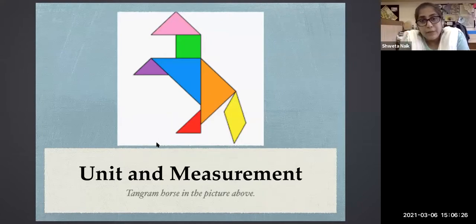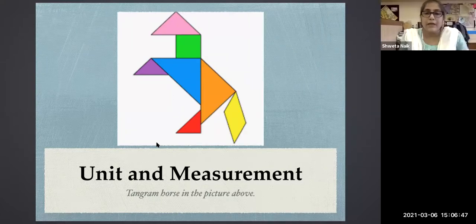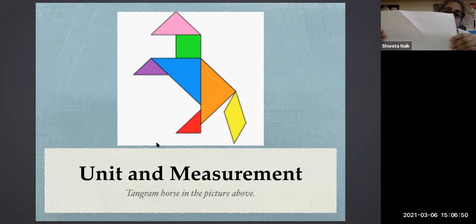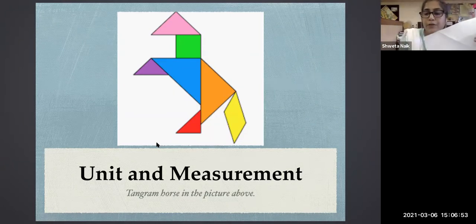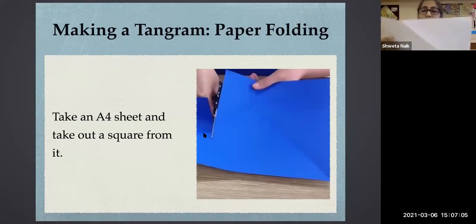This is a familiar picture for many math teachers — these are tangram pieces, and this is a horse made from a tangram. A tangram can make an infinite number of shapes. We are going to try and make a tangram. I would ask all of you to get an A4 size paper. If you have a square paper, take that. If you have an A4 sheet, make a square sheet from it by folding it and cutting off the extra part.